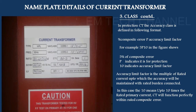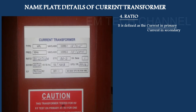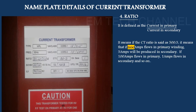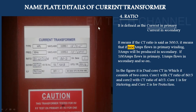This is the class. The ratio is the primary current to secondary current. If we say 500 by 5 — we divide 500 by 5, which gives 100 — so the CT ratio is 100. The primary is 500 amps and the secondary is 5 amps. For example, the CT ratio shown here is 400/5 or 80/5.